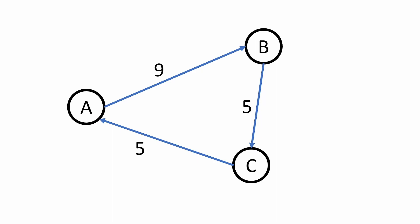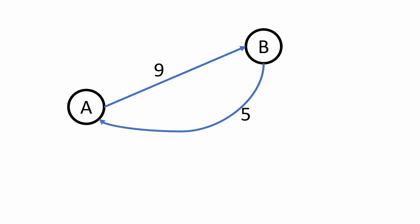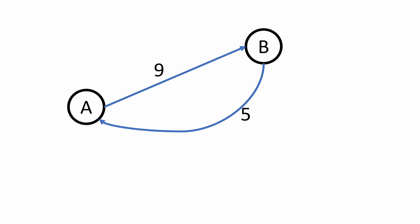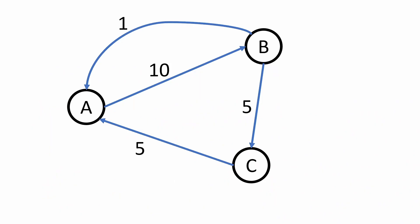Another simplification: B pays C 5 rupees and C pays A 5 rupees, so C acts as an intermediate node — it just gets 5 and pays out 5. We can remove C and create a direct edge from B to A of value 5. Then A pays B 9 and B pays A 5 back, which means A pays B 4 rupees. We've simplified the graph a lot.